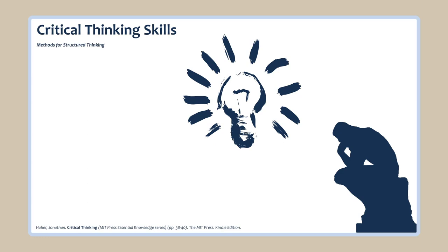In his text Critical Thinking, Jonathan Haber lays out the components of structured thinking and logical arguments. Haber suggests the reasons we look for methods for structured thinking are to make clear what we or others are thinking or communicating, make transparent the reasons behind what we believe or want others to believe, and to determine if they justify reasons for belief.